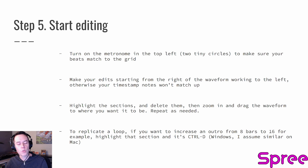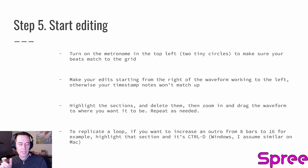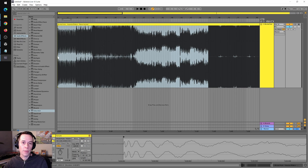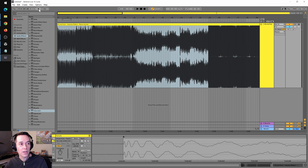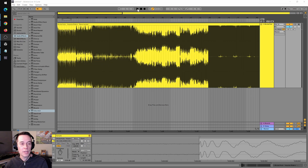The first thing we're going to do is turn the metronome on in Ableton, just to make sure it's snapped to the grid properly before we start making our edits. Then we're going to make our edits starting from the right of the waveform working to the left — otherwise our timestamps won't match up. Then we'll highlight the sections we want to delete, delete them, move the waveform over, and at the very end I'll show you how to replicate that loop we had at hot cue H. Back in Ableton, the metronome is the little two-dot icon in the upper left-hand corner — it'll help us make sure the beats are on grid.